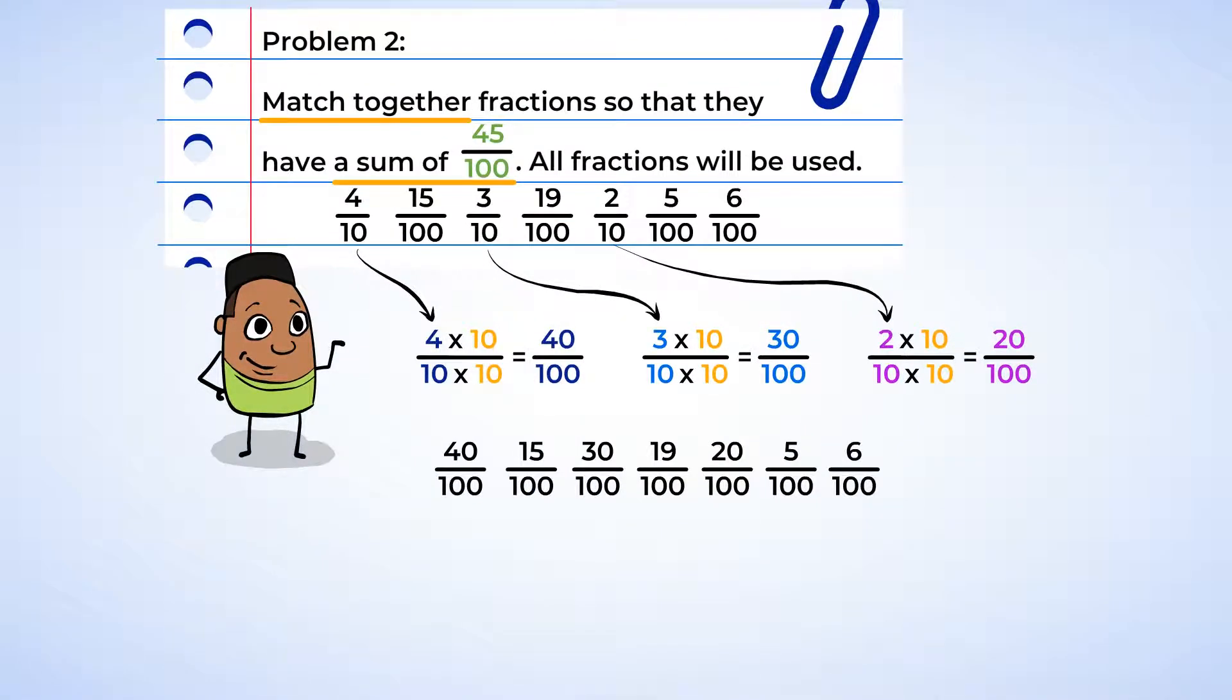Now we can start looking for sums of 45 by using the numerators. Starting with 40 hundredths, 5 hundredths needs to be added to get it to a sum of 45 hundredths. And look! Our first match! Moving on to 15 hundredths. 15 hundredths plus 30 hundredths will give us a sum of 45 hundredths. There we go! Our second match!